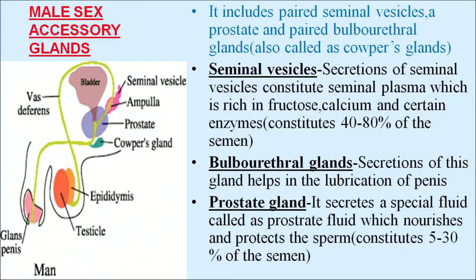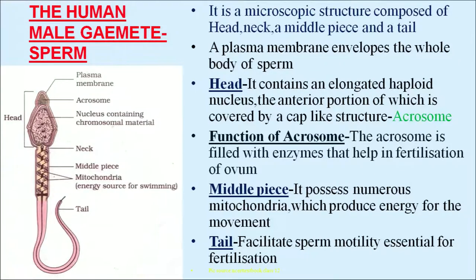Male sex accessory glands include paired seminal vesicles, a prostate gland, and paired bulbourethral glands — also called Cowper's glands. Secretions of seminal vesicles constitute seminal plasma, which is rich in fructose, calcium, and certain enzymes, and constitutes 40 to 80 percent of the semen. Secretion of the bulbourethral gland helps in lubrication of the penis. The prostate gland secretes prostatic fluid which nourishes and protects the sperm, and constitutes 5 to 30 percent of the semen.